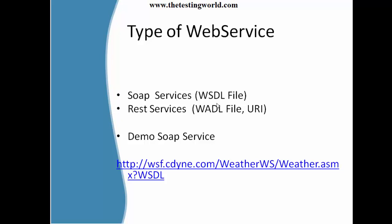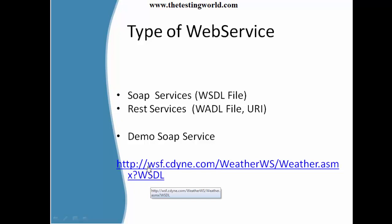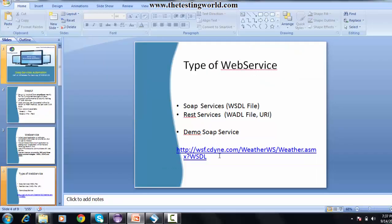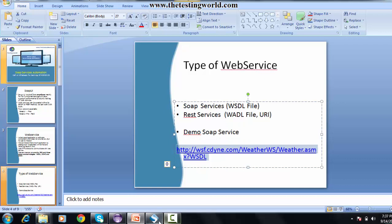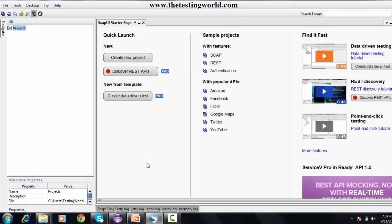The WSDL file is an XML file and is created even before service development. It is used by developers for building the services, and we use the same WSDL file for automating those services. Whenever you automate a web service, you will have the URL of the WSDL file. I am picking this URL and moving to SOAP UI.